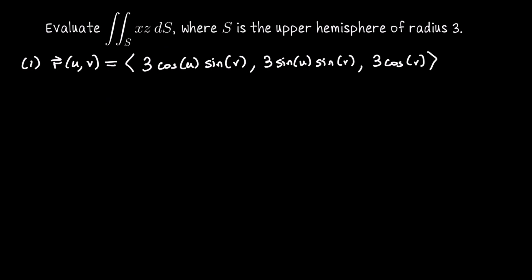For this sphere, we have the entire upper hemisphere — we're not just in the first octant or anything like that. So u will go from 0 to 2π. On the other hand, we are only going from the north pole down to the equator, so v will go from 0 to π/2. For the entire sphere, v would go from 0 to π.